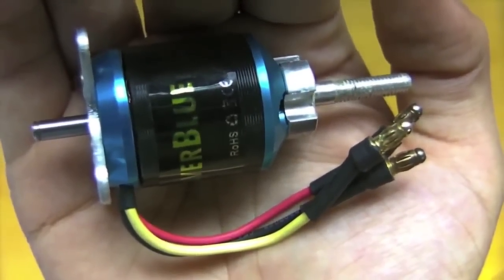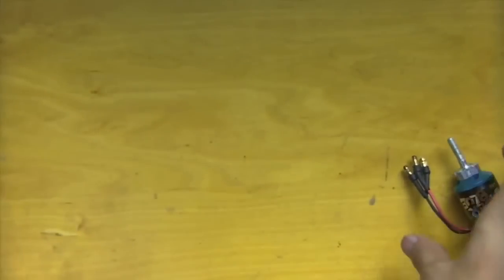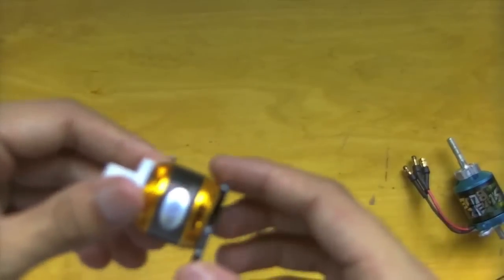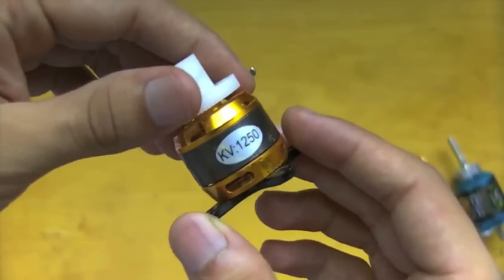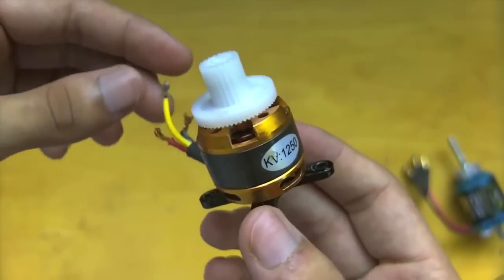These motors also have a rating known as the KV rating. It's a misleading name. KV makes you think of kilovolts. However, the K stands for constant. This constant, when multiplied by the number of volts, would give you the number of RPMs your motor is running at.